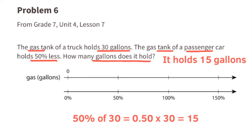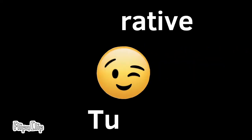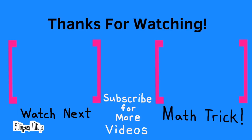We can also figure this out using the double number line. 100 percent of the tank is 30 gallons, so above 100 percent we write 30. To find 50 percent of 30, we find the number halfway between 0 and 30, which is 15. Above 50 percent we write 15, confirming the passenger car's gas tank holds 15 gallons. Be sure to support my YouTube channel by liking this video, leaving a comment, and subscribing. Thanks for watching!